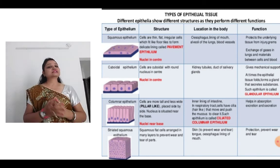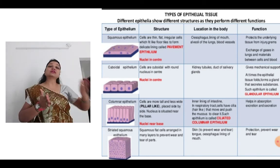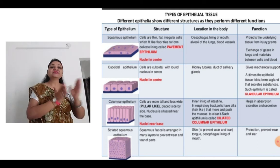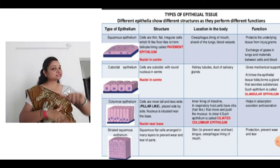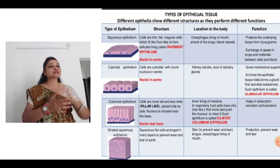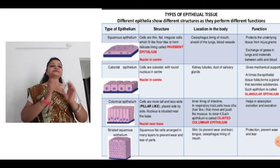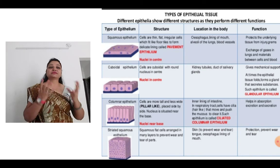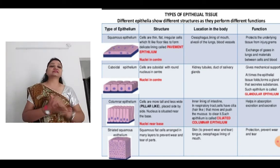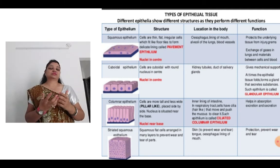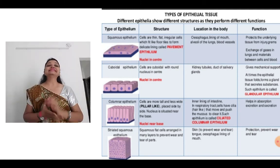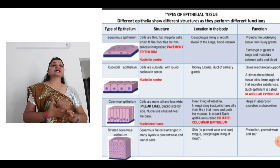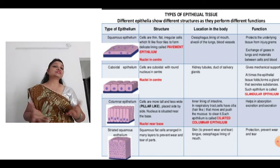Next is the columnar epithelium. The cells are more tall and less wide — pillar-like — placed side by side. The nucleus is at the base. It is found in the inner lining of the intestine. In the respiratory tract, cells have hair-like structures called cilia that move and push mucus — this is called ciliated columnar epithelium. Its function is it helps in absorption, excretion and secretion because of these cilia.